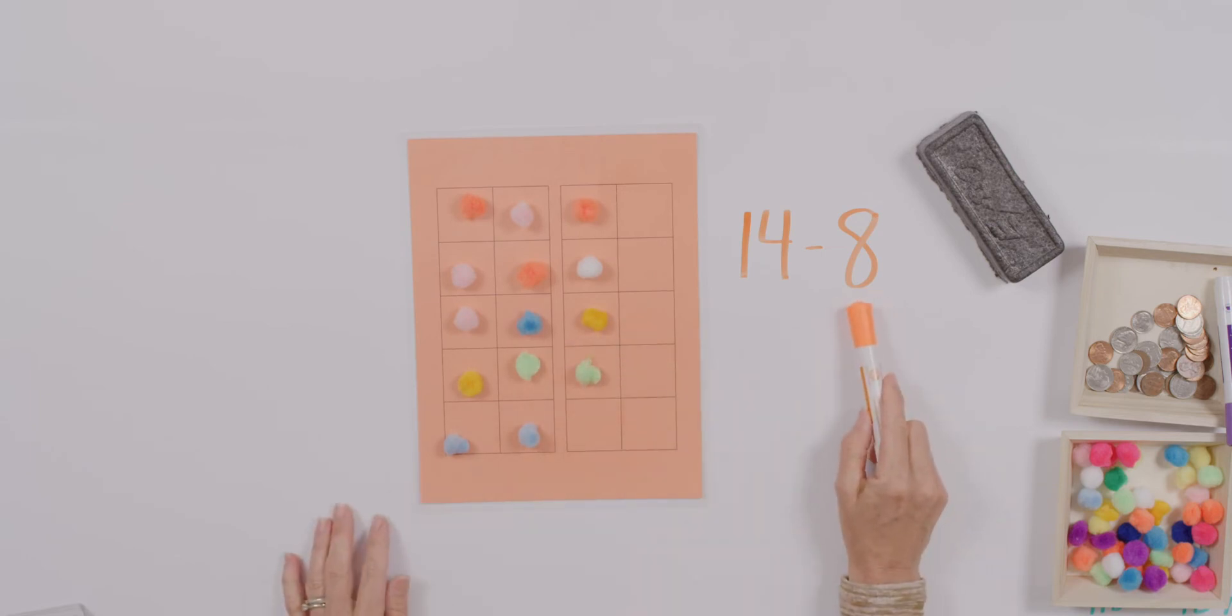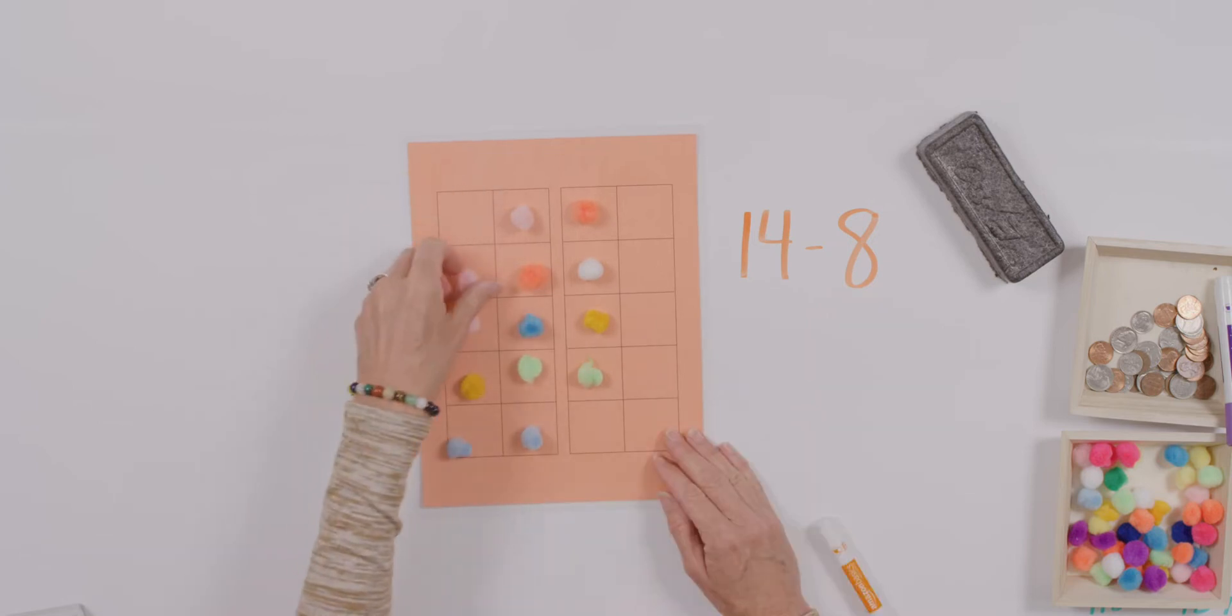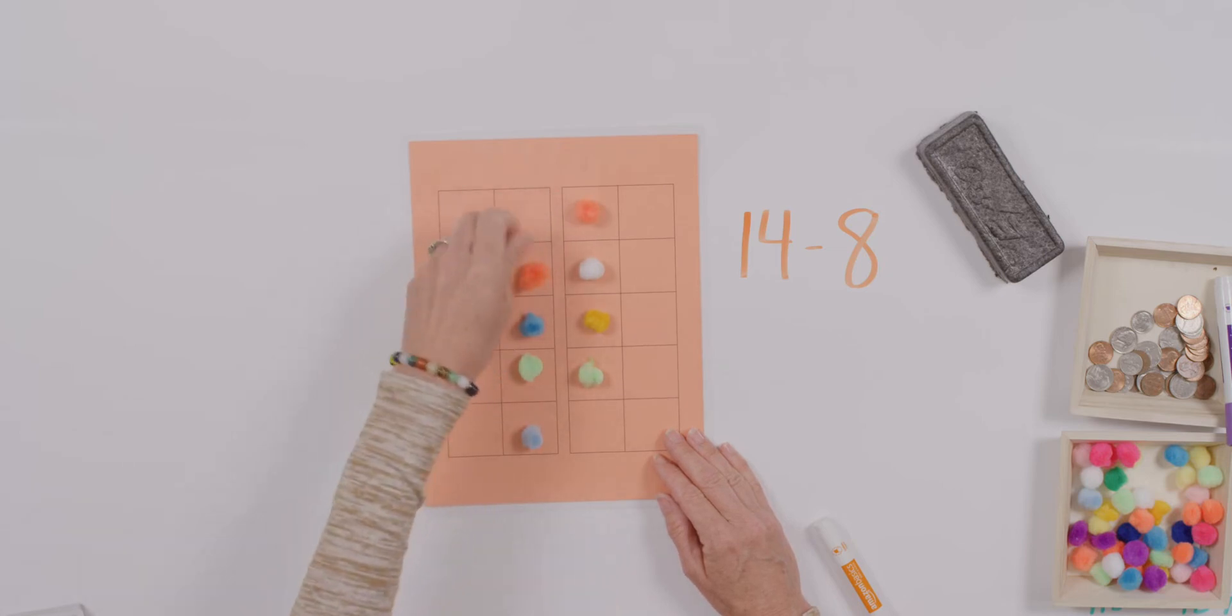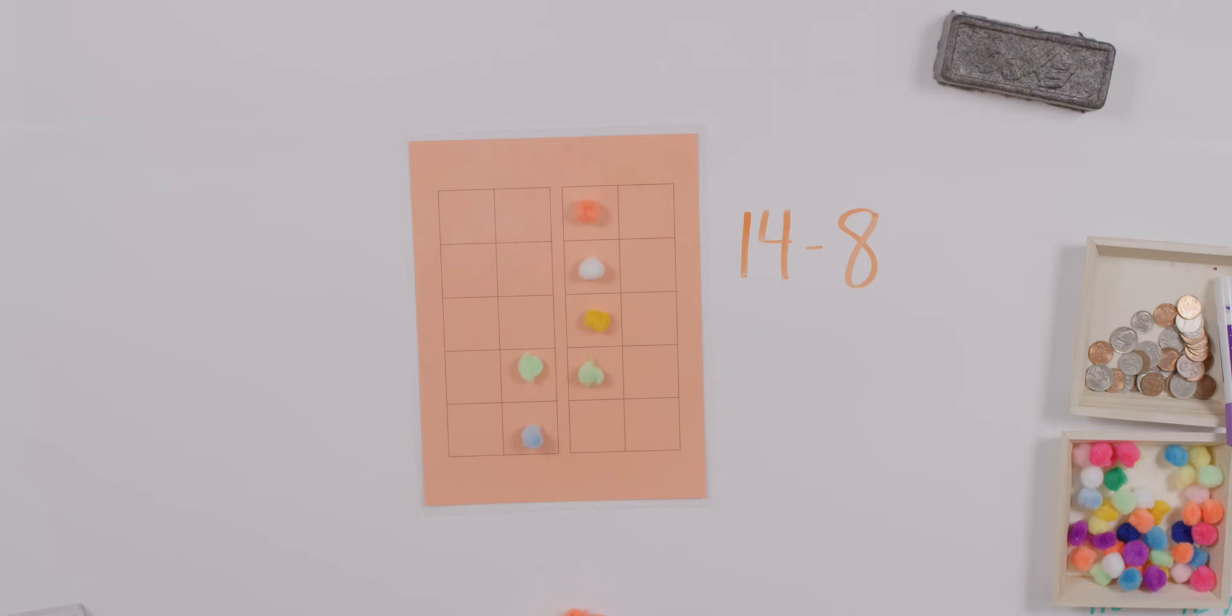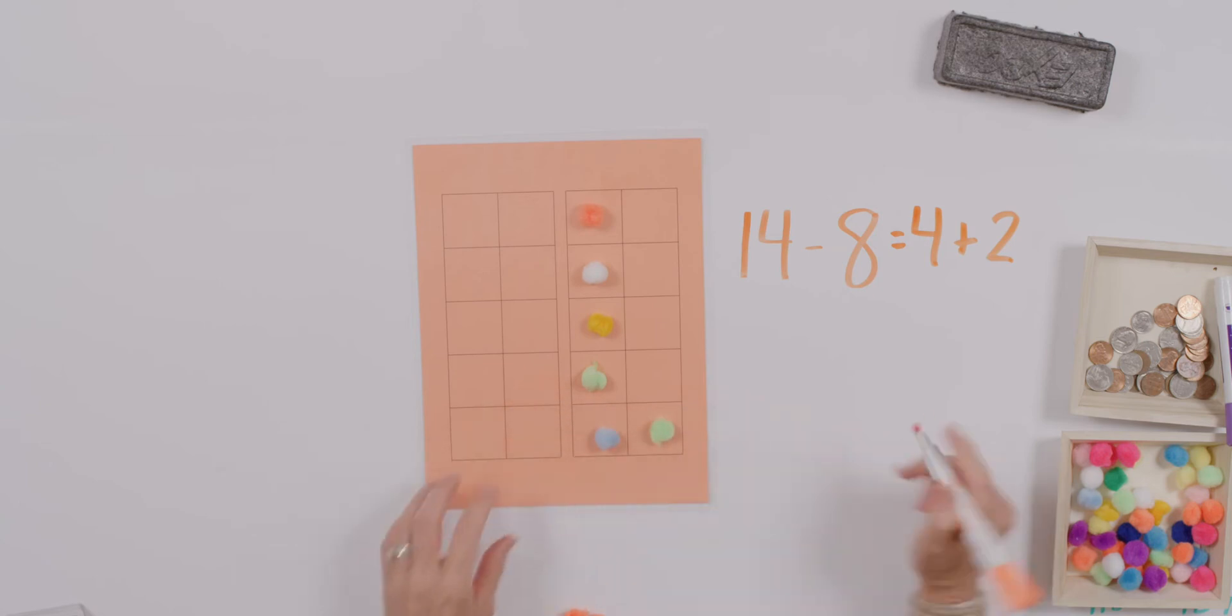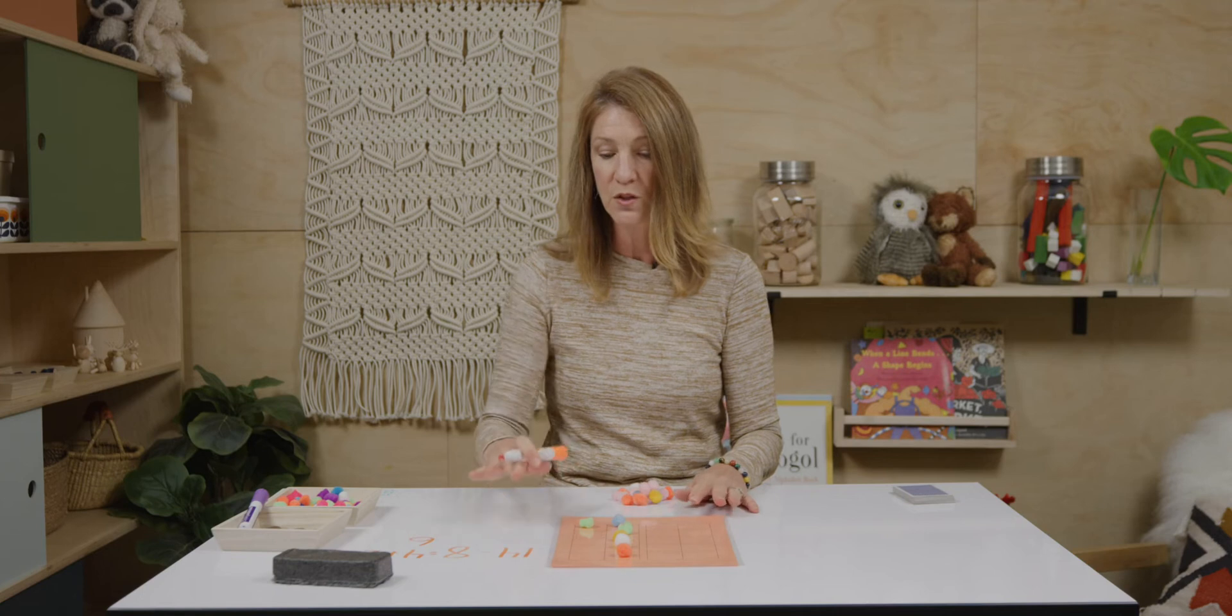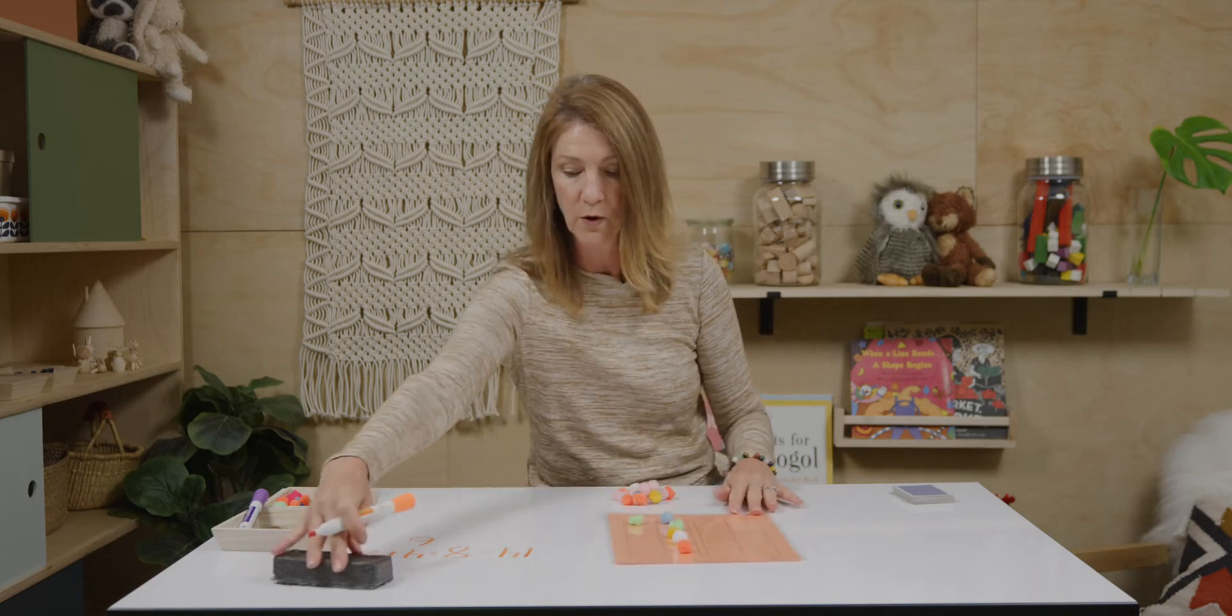All right. Now, I'm going to take eight away from my fourteen. One, two, three, four, five, six, seven, eight. Were you able to see that there would be two left? So now, we can say that fourteen minus eight is equal to four plus two. Or we could just slide these two over here and recognize that we have six. Okay?